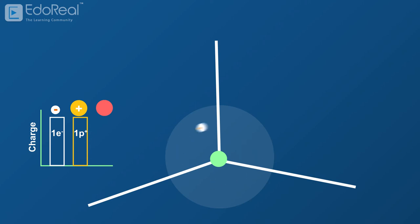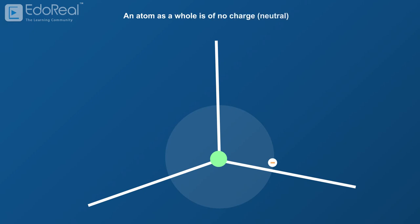Neutrons are uncharged particles found within the nucleus. In general, an atom as a whole is of no charge, that is neutral, since it comprises equal number of protons and electrons.